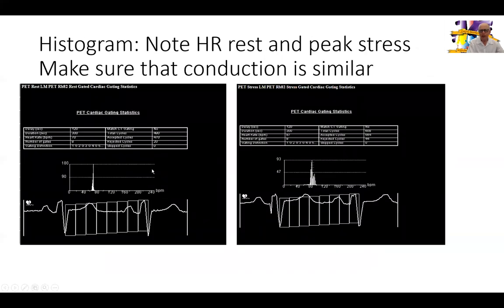Now we go to the analysis of the histogram for the gated images. Rest is on the left and stress is on the right. Heart rate was 70 at rest with a very good histogram, and 87 with stress with some variability but still a good histogram. If the patient were pacing during rest or stress, you would see just a sharp single line in the histogram. This instance appears to be physiologic conduction and not pacing. It's important to review these because patients can transition between pacing and physiologic conduction during the stress test when regadenosine is injected.